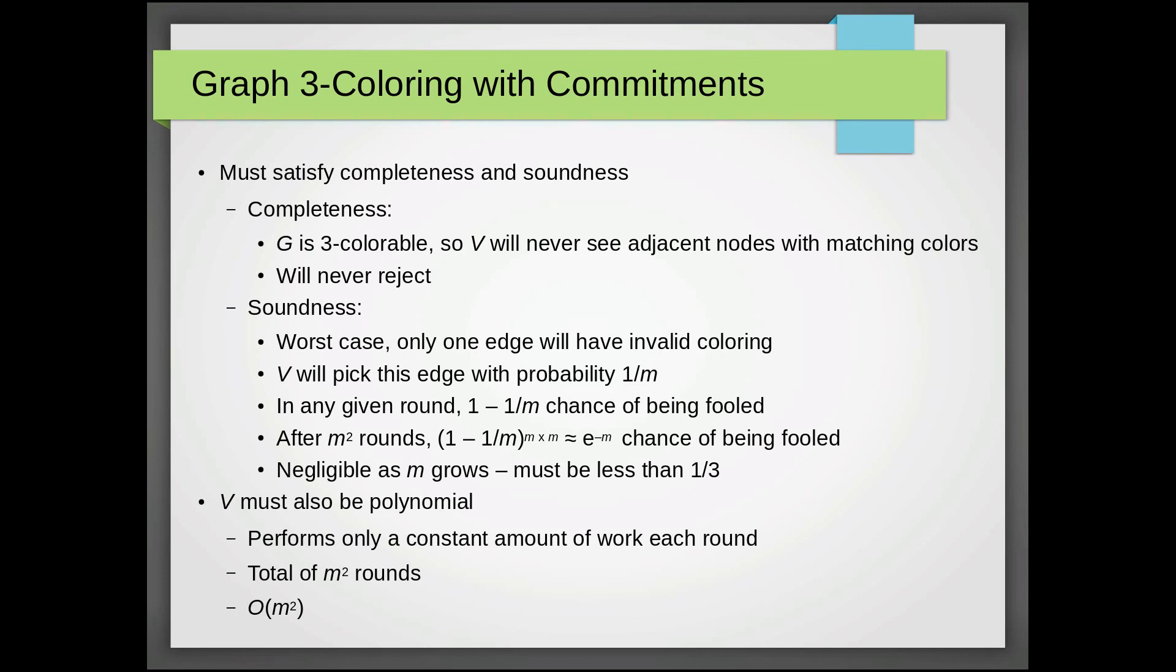So if G is three colorable, that means that V will never see adjacent nodes with matching colors. If you recall, the only way that we can ever reject a graph is if we do see adjacent nodes with the same color. Therefore, V will never reject and accepts all strings in the language with probability one, which is greater than two thirds.